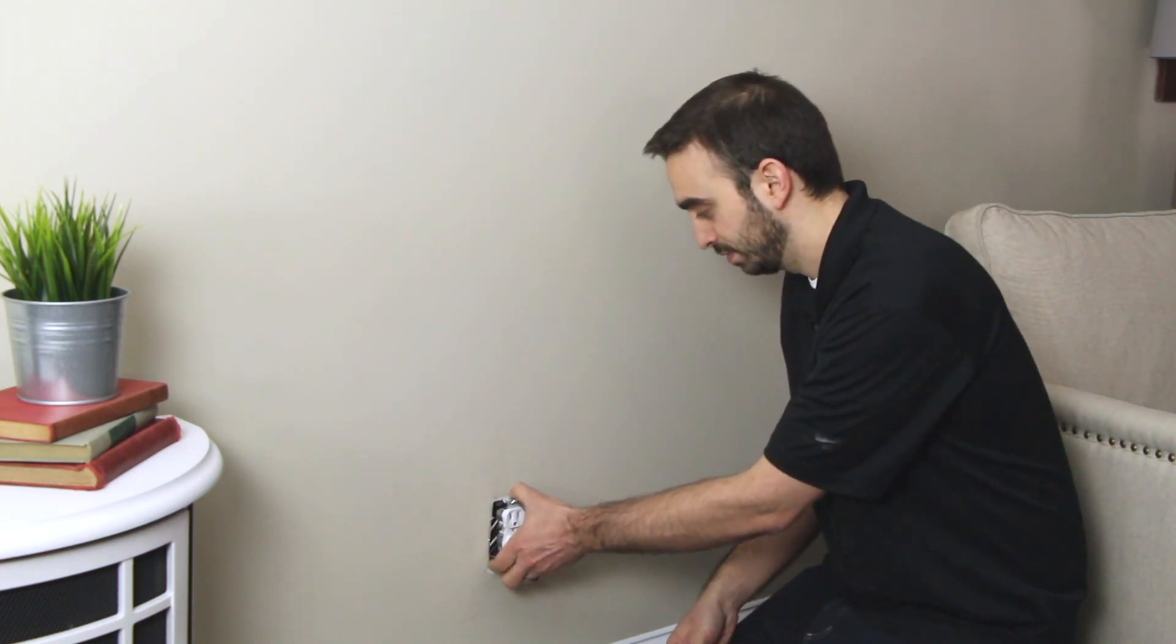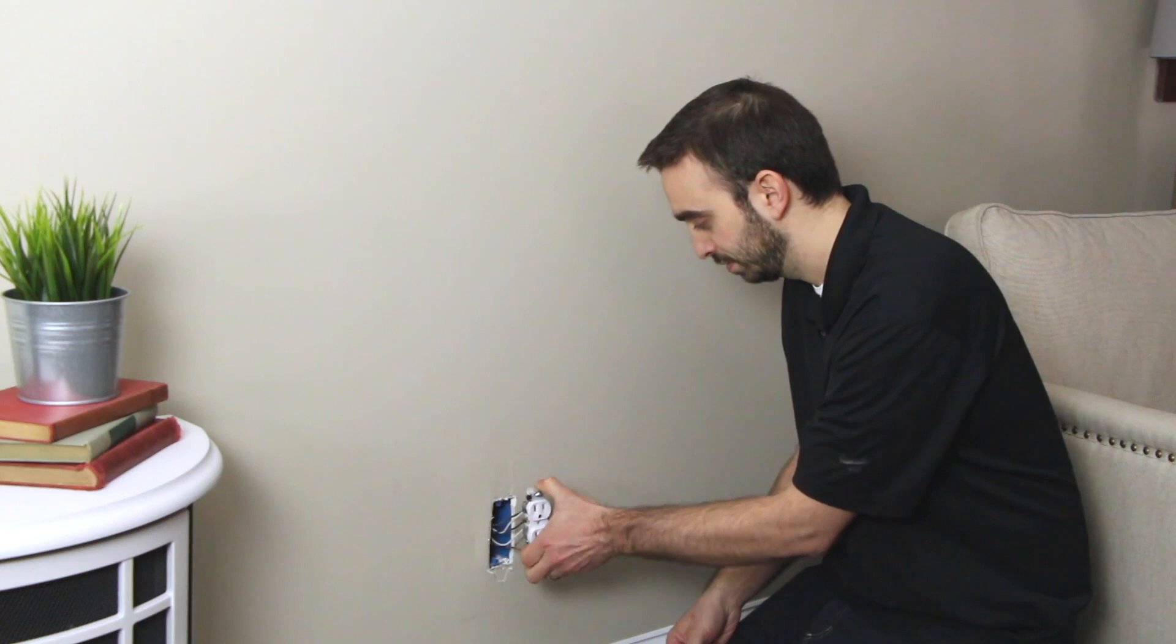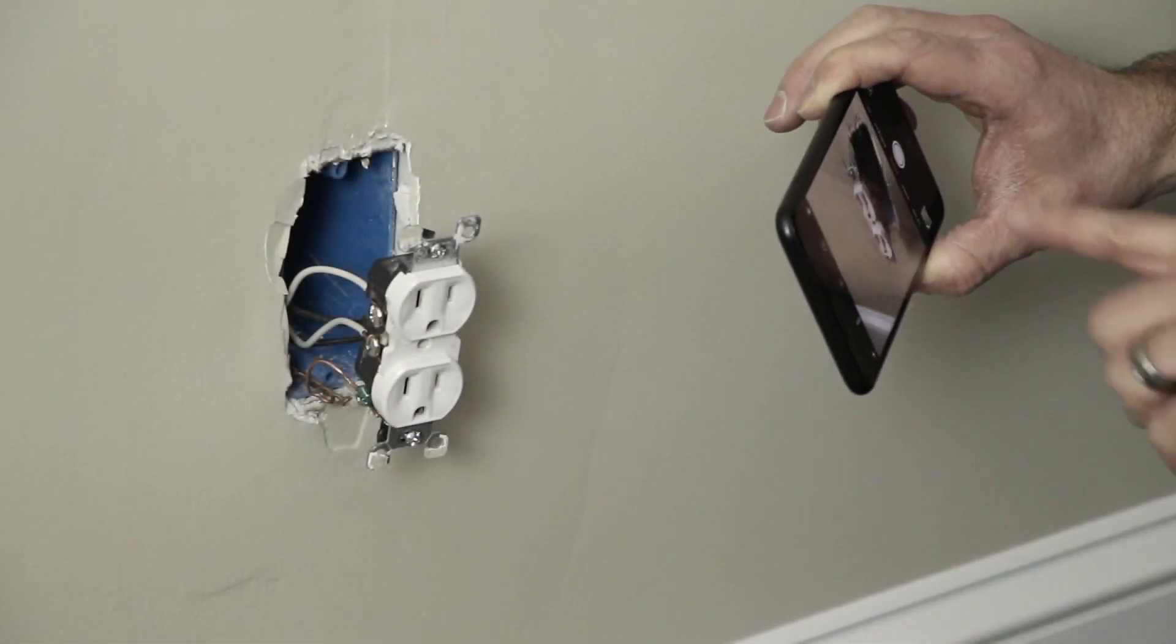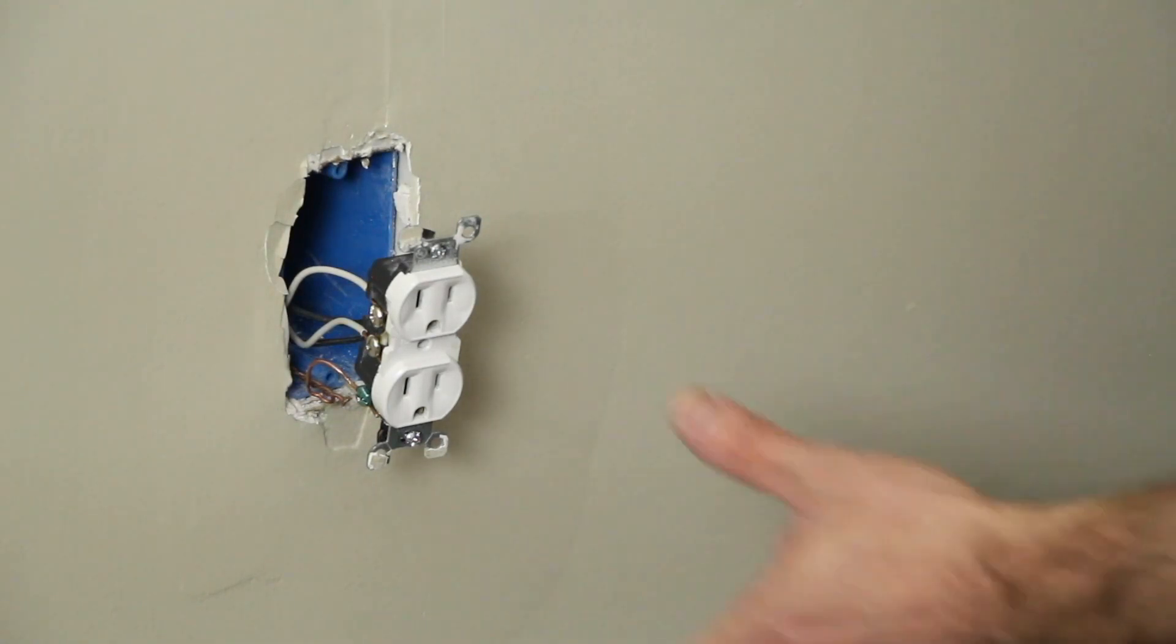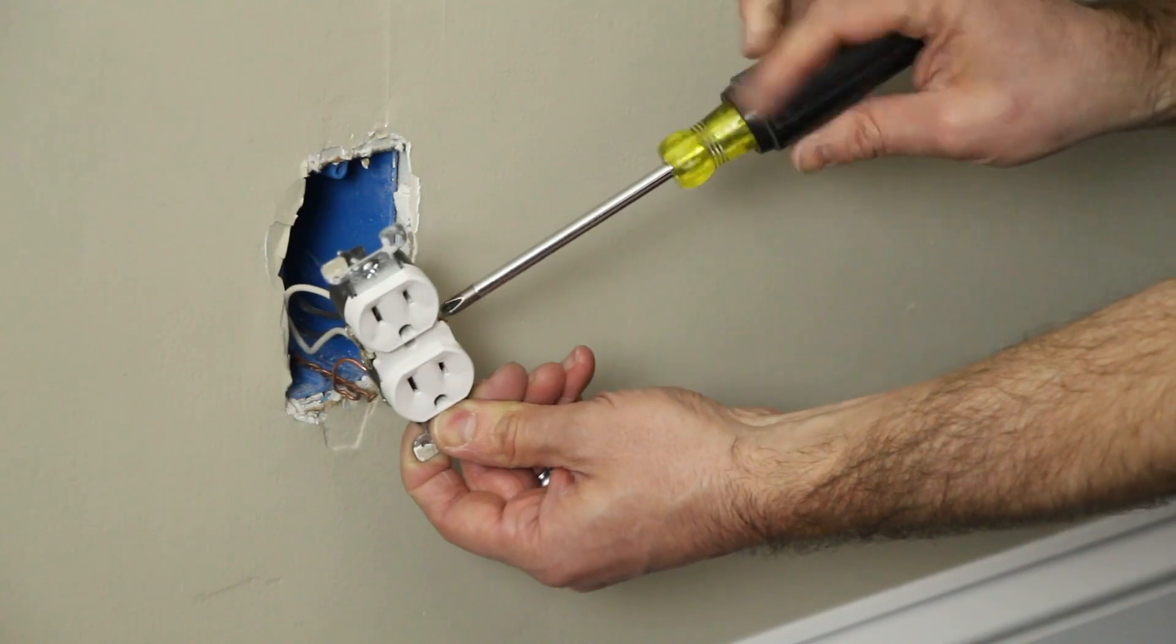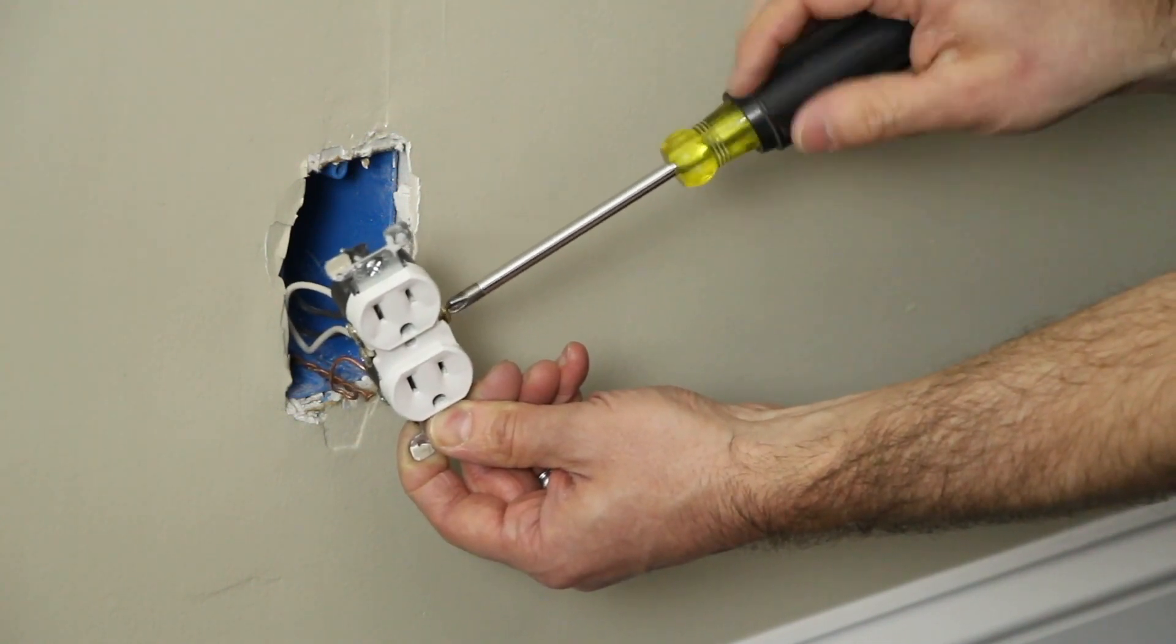Carefully pull on the outlet to remove it from the gang box. Take a photo of your existing wiring for future reference. Disconnect your old wall outlet by unscrewing and removing the existing wires.